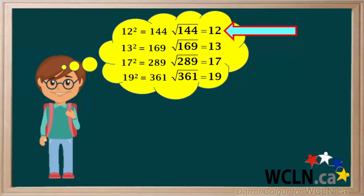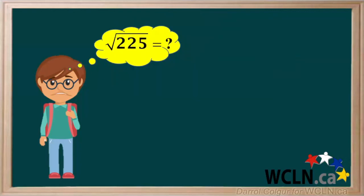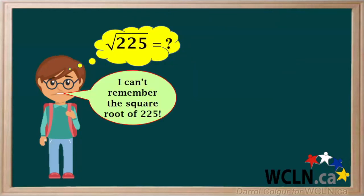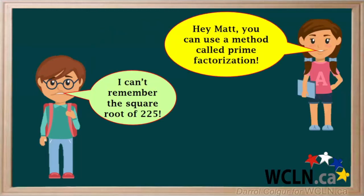Therefore he knows that the square root of 144 is 12, and the square root of 169 is 13. But what about the square root of 225? Matt can't remember that one.